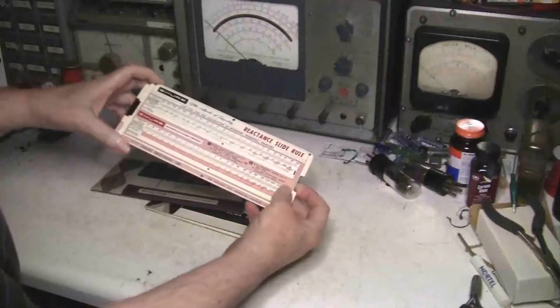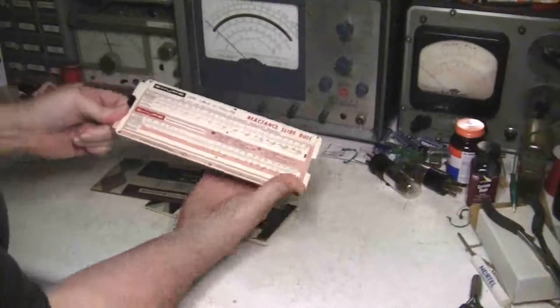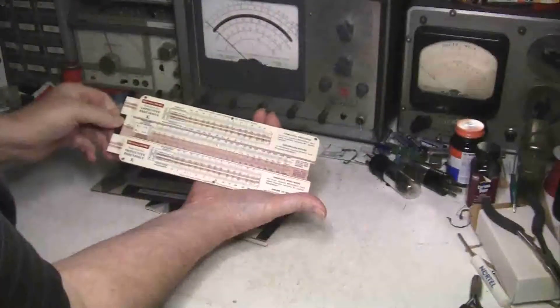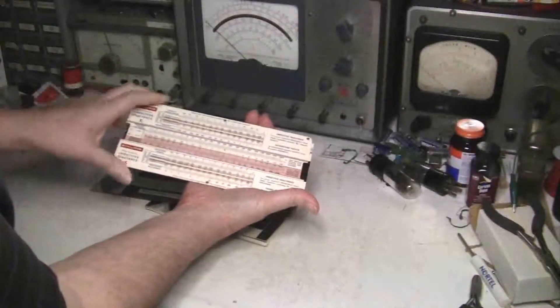And here's the slide rule. You can see why it's called a slide rule - there's lots and lots of numbers, and part of those numbers slide.